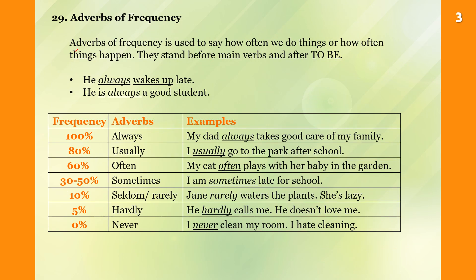Adverbs of frequency are used to say how often we do things or how often things happen. They stand before main verbs and after the be verb. For example: 'He always wakes up late.'